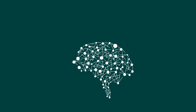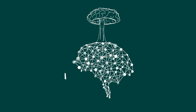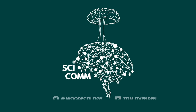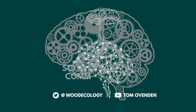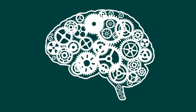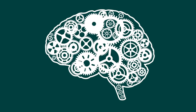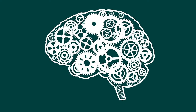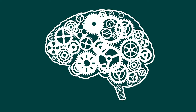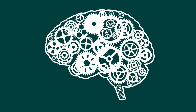Hi guys, my name's Tom Ovenden and in this quick tutorial I'm going to go over how we can take quite complex vector graphics that you may have downloaded from online and use Illustrator to split these images up into their component parts so that we can then animate these objects individually in After Effects.